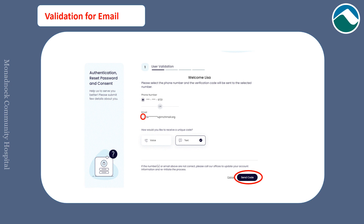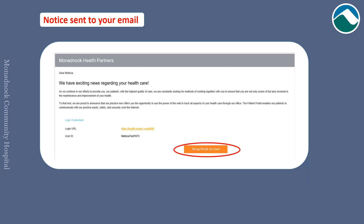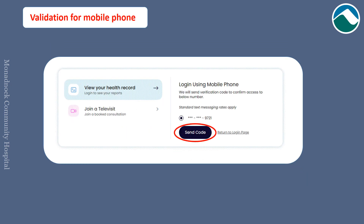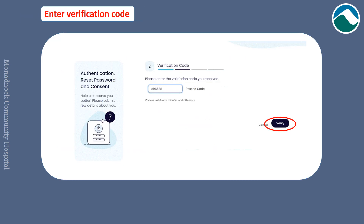Depending on your choice, you will either receive an email with the option to set up a portal account, or a text with a code. The following are examples of what those screens may look like: validation for email, the notice sent to your email, validation choice for mobile phone, and the area where you will input the code that was sent to your mobile phone.